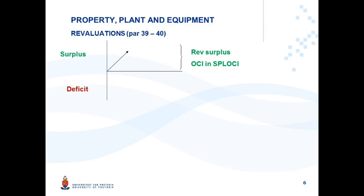Now things change on this same asset where you first had a revaluation surplus, and you now have a subsequent revaluation resulting in a deficit — the asset is valued downwards. You credit the asset account since its value has decreased. For the debit, you first reverse the existing surplus available on this asset — you use up that surplus with a debit through OCI to clear the surplus balance. If the deficit exceeds that surplus, you take the remainder as a debit entry through profit or loss.